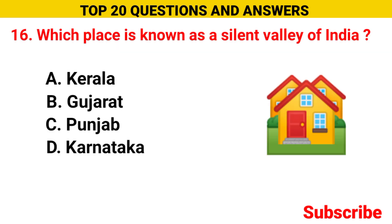Which place is known as the silent valley of India? Option A Kerala, option B Gujarat, option C Punjab, option D Karnataka. The correct option is option A, Kerala.